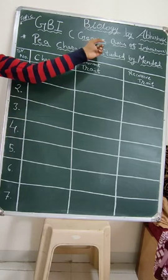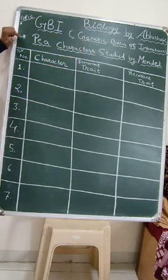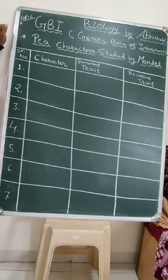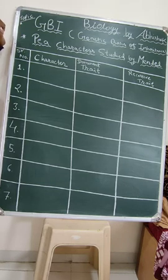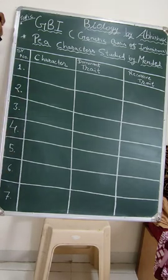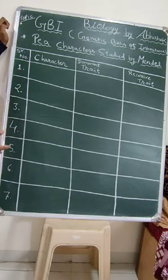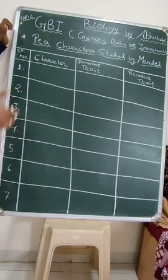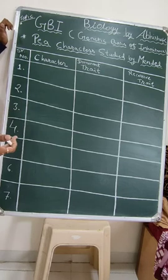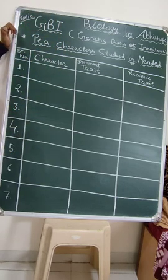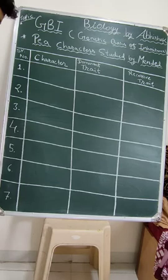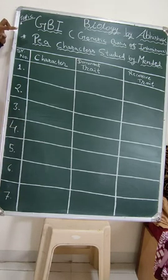From the genetic basis of inheritance, we were studying the most important part: selection of a pea plant. Mendel selected the pea plant because it consists of contrasting characters. Mendel firstly wanted to study 34 characters of pea plant, but later it came to 22 characters, and at the end he finalized only 7 contrasting characters of pea plant.